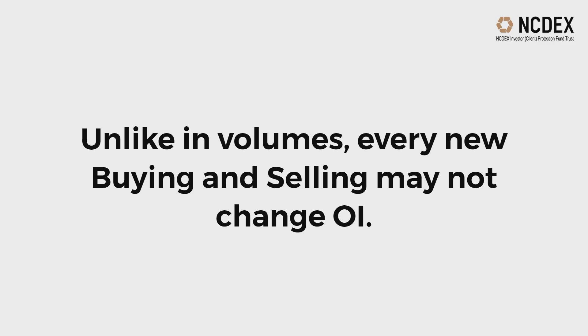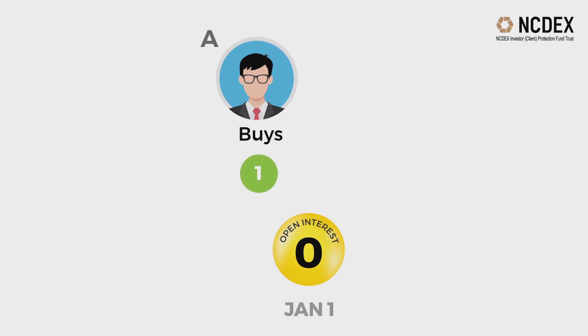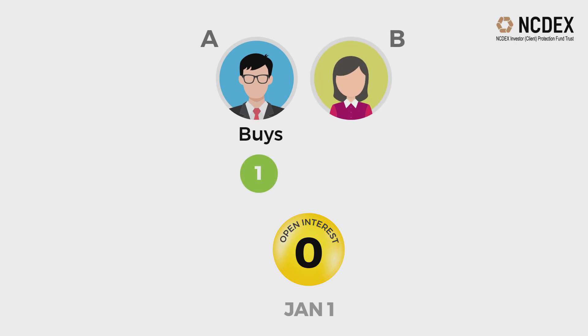Let us understand this with an example. Suppose trading starts in a new contract. On January 1st, new participant A buys 1 contract and new participant B sells 1 contract. OI goes up from 0 to 1, up 1.